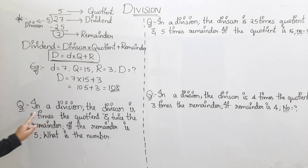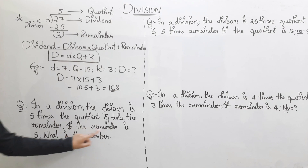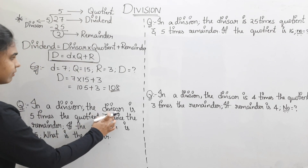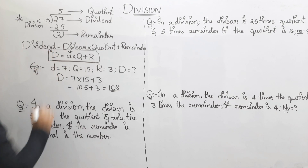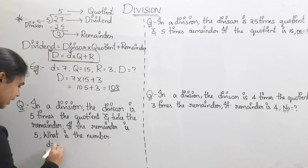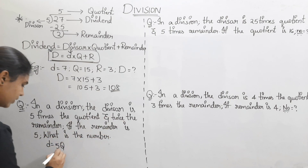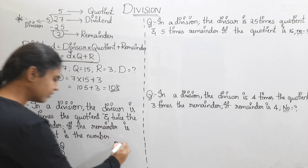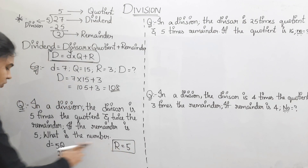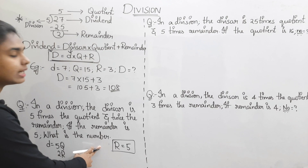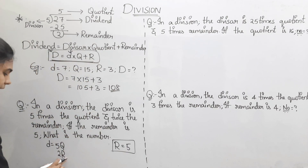First question: In a division, the divisor is 5 times the quotient and twice the remainder. If the remainder is 5, what is the number? We have information about the divisor — divisor is small d and dividend is capital D. Divisor equals 5 times the quotient and 2 times the remainder.